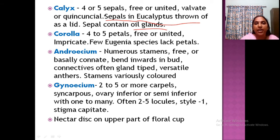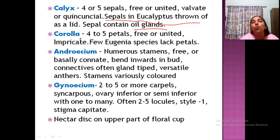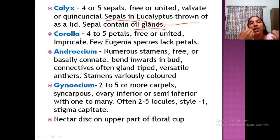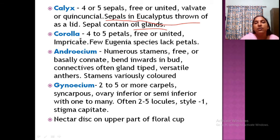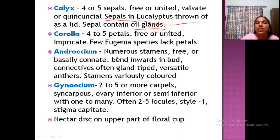The corolla has four to five petals, all free or usually united. In Eugenia species petals are absent, but in all other cases four or five petals are present. The androecium has numerous stamens, which are free but usually basally fused. A particular feature is that the stamens are bent inward inside the bud. The connectives bear glands; sepals in eucalyptus also have glands. Stamens are versatile — meaning they fall off easily — and are also coloured. The gynoecium has two to five carpels, syncarpous, and the ovary is inferior or semi-inferior. Perigynous or hypogynous conditions both occur.